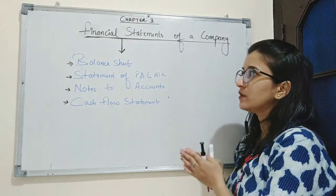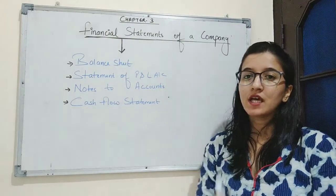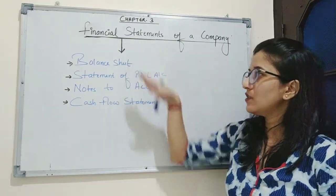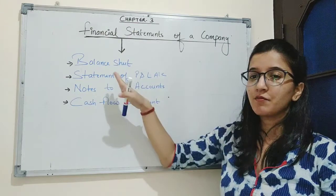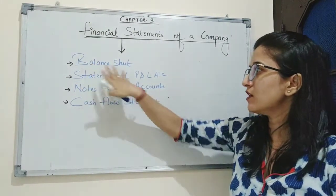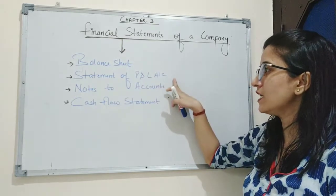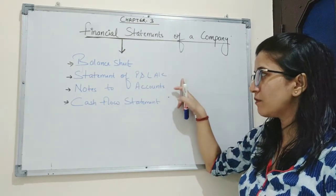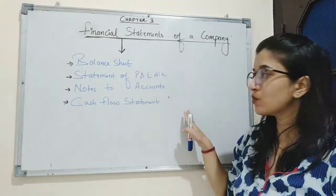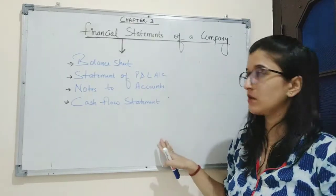As we have learnt in the previous class, financial statements are the final accounts of the company. Financial statements comprise four things: first is balance sheet, second is statement of P&L account, third is notes to accounts, and fourth is cash flow statements.